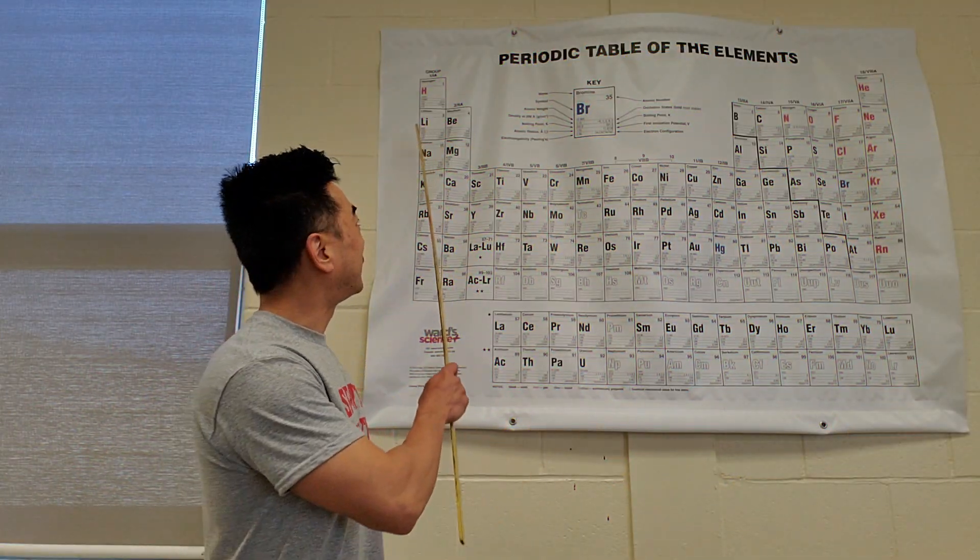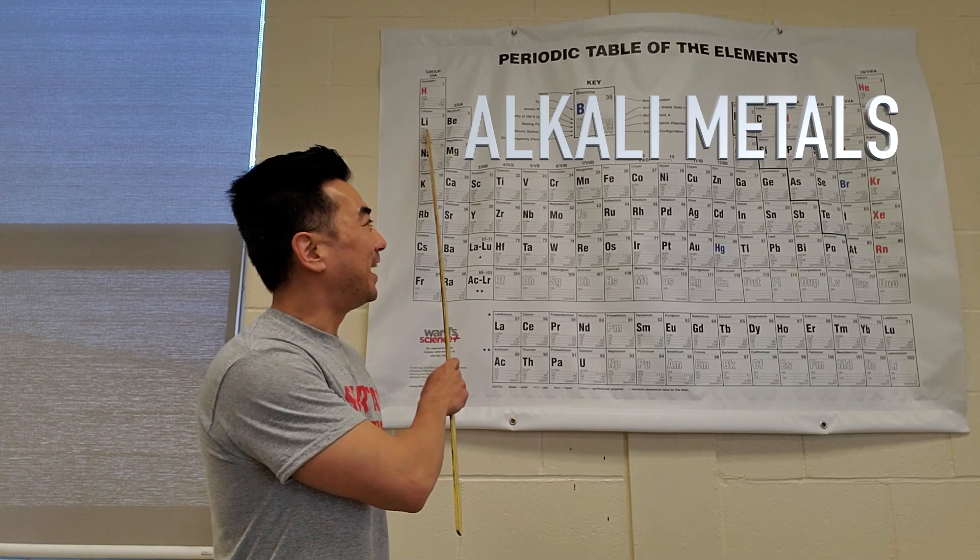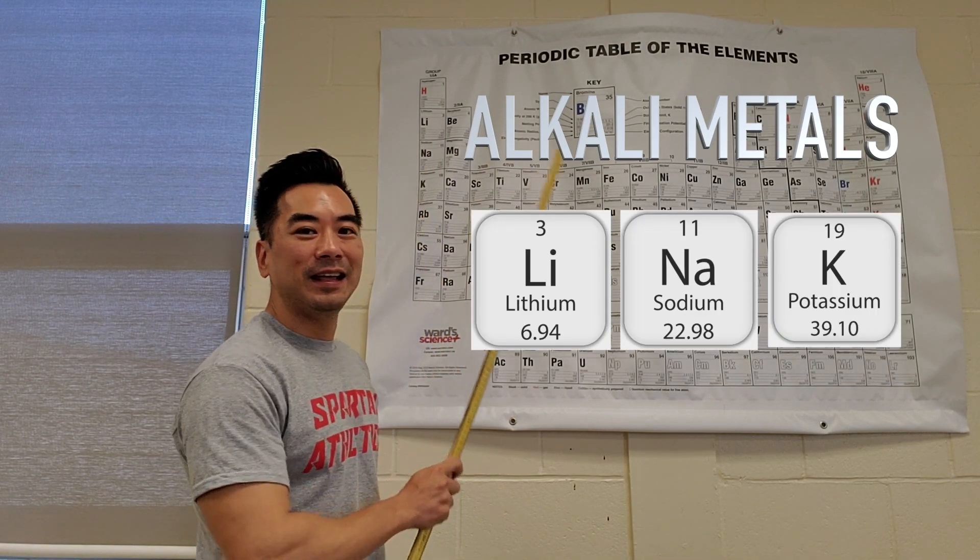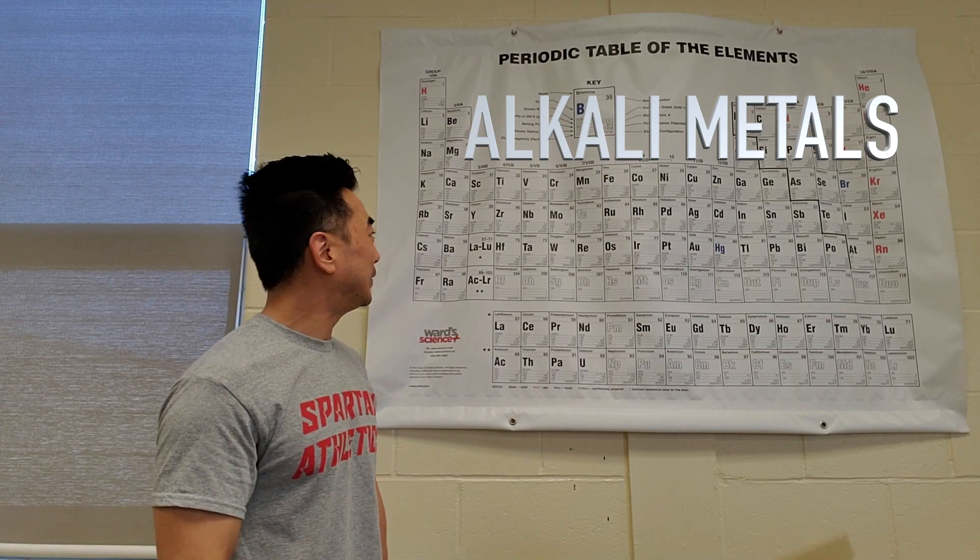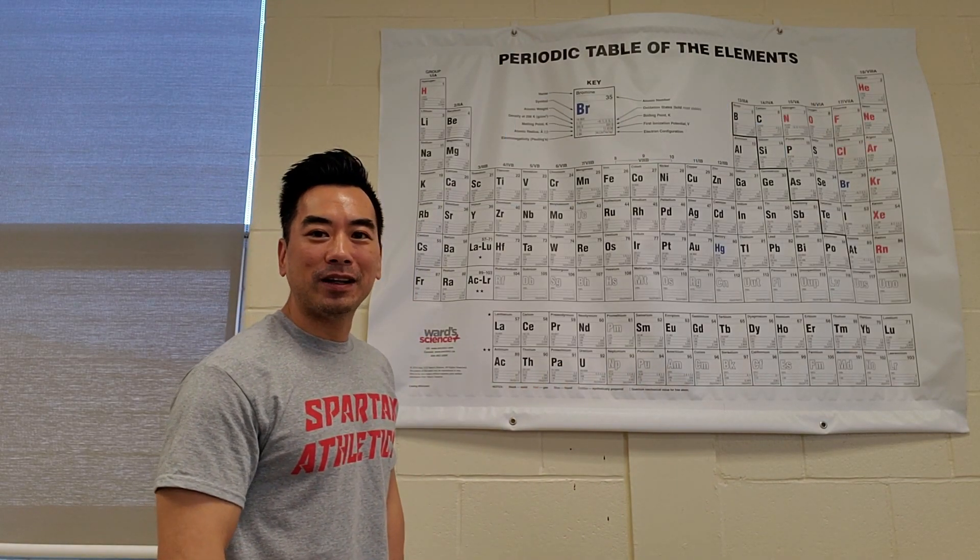The alkali metals occupy the first group of the periodic table called the alkaline metals and they include lithium, sodium, and potassium. These metals are really reactive to water and oxygen. The other alkali metals include rubidium, cesium, and francium, but these metals are so reactive that we can't even store them in school.